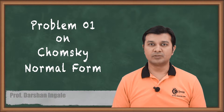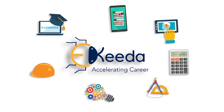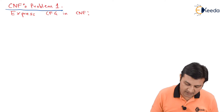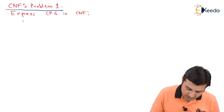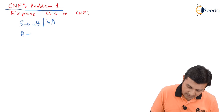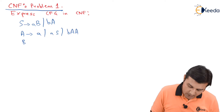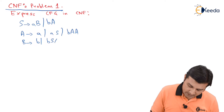The question given to us is as follows: Express the following CFG in CNF. The productions are S gives AB or BA; A gives small a, or AS, or BAA; B gives small b, or BSA, or ABBA.